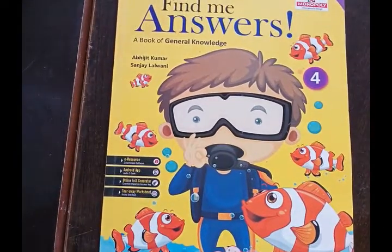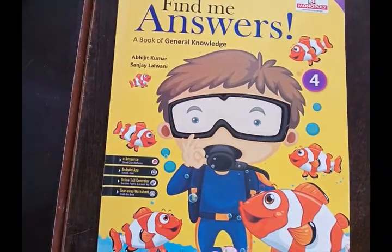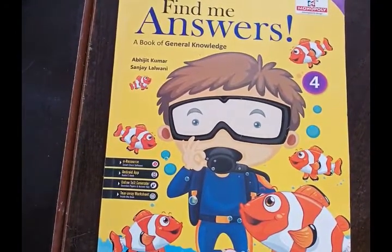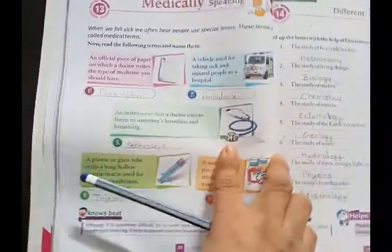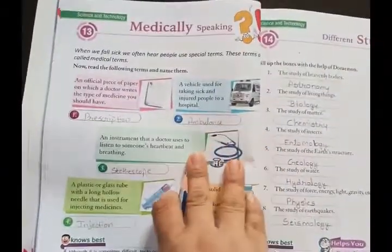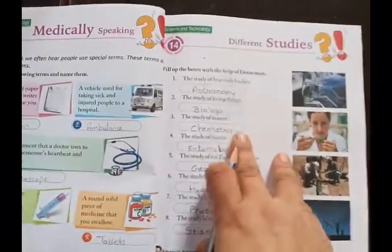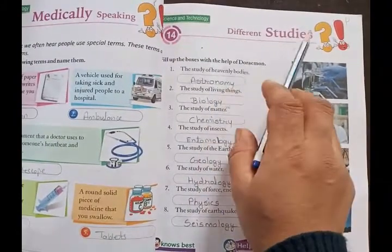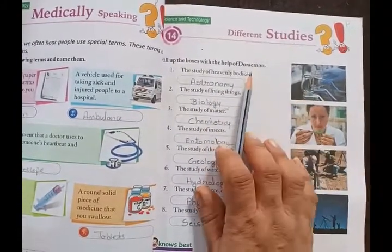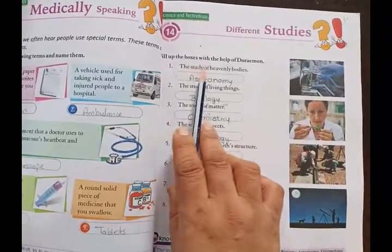Hello children, this is your GK class and I'm going to teach you GK chapter 14 of class 4th. Let's get started. The title of chapter 14 is 'Different Studies' — meaning alag-alag study, alag-alag padhai.